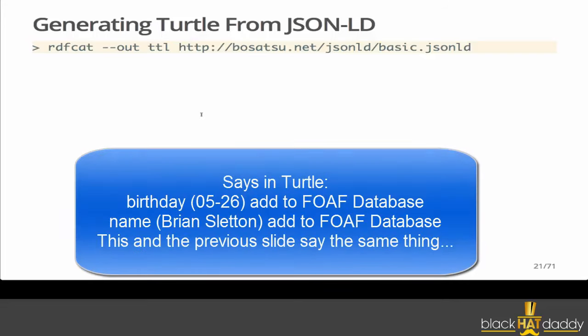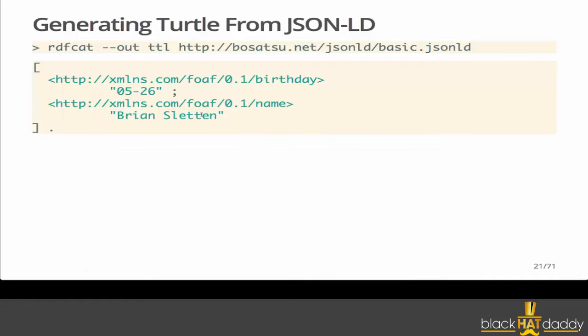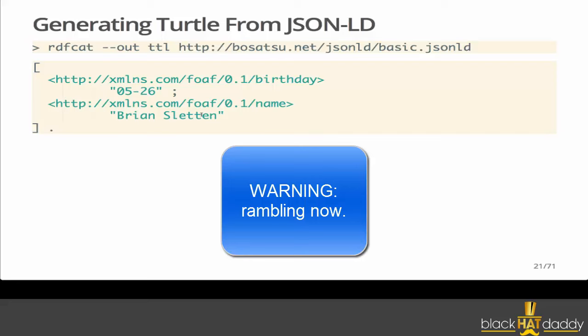Because JSON-LD is a standard and can express directed graphs, I can go back and reuse standard tools like rdf:cat, which understands JSON-LD and how to convert it to and from RDF. I can say: give me the Turtle serialization of the information in this document. It may surprise you that what we get back is a blank node — a concept in RDF for things that have attributes but no apparent identity. Because JSON has no notion of identity, it has no way of associating identity with this object; it doesn't know that I have an identifier registered at w3id.org. So it simply says: there is something that has a birthday and a name.